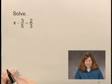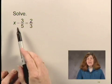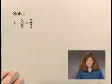We'll solve this by adding 3 fifths to both sides of the equation in order to get x by itself on one side of the equation.